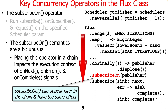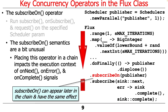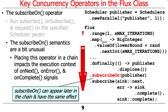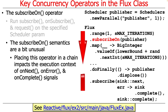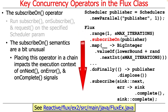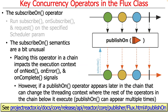Note that subscribeOn can appear anywhere in the chain — here we put it second, but you could also put it right before the end or anywhere in the middle and it would have exactly the same effect. That's part of what makes this a little unusual. The other thing that makes it unusual is that when subscribeOn occurs, it also influences things that come before it in the chain, which is definitely a bit unusual.